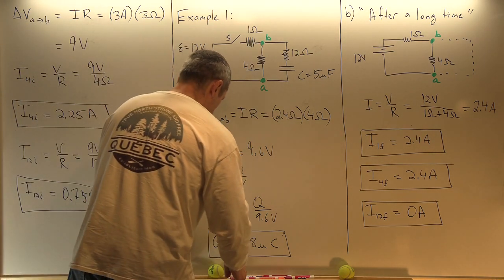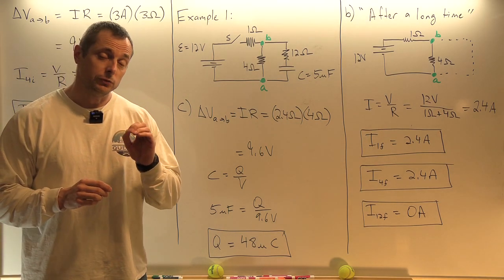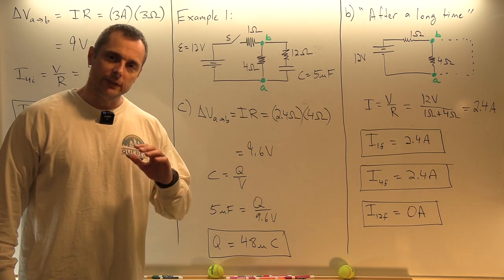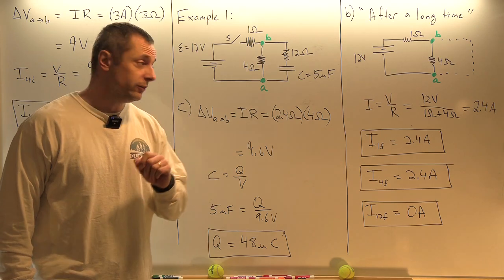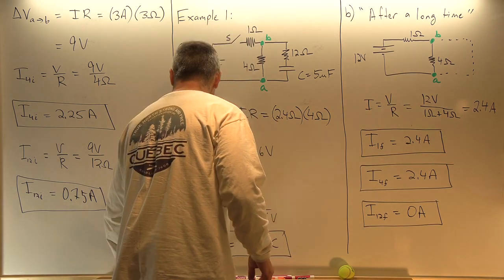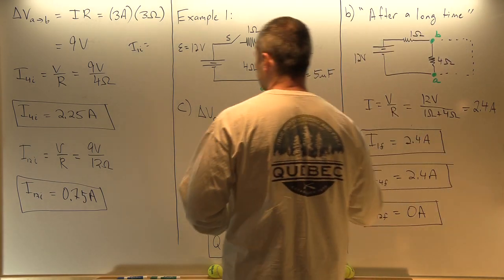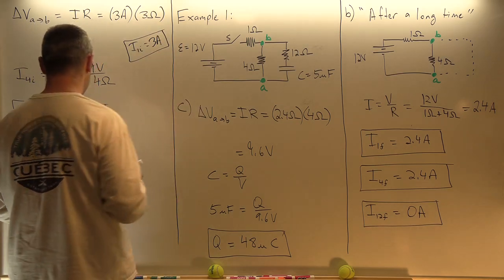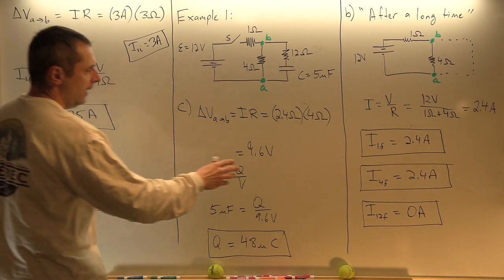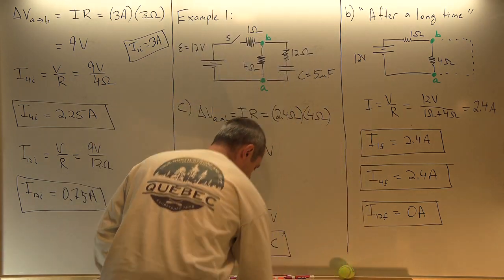Sometimes you're not responsible for calculating the actual amps at any moment between these two values, but you may be responsible for creating a graph that shows the pattern. You still have to estimate the pattern. The 1-ohm resistor starts at I₁ initial of 3 amps and then I₁ final goes to 2.4 amps. I₄ goes from 2.25 to 2.4, and I₁₂ goes from 0.75 to 0. You might have to graph these trends.